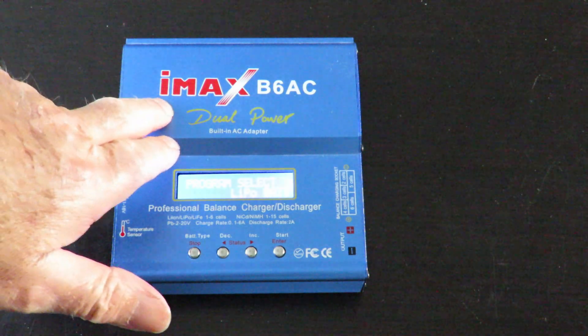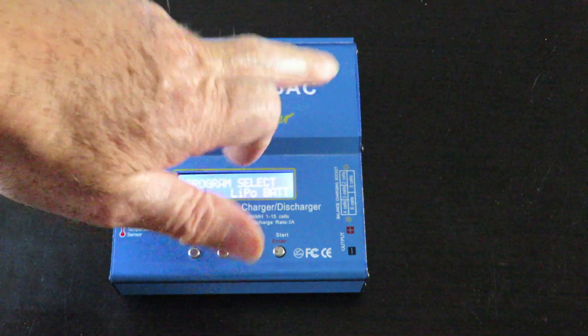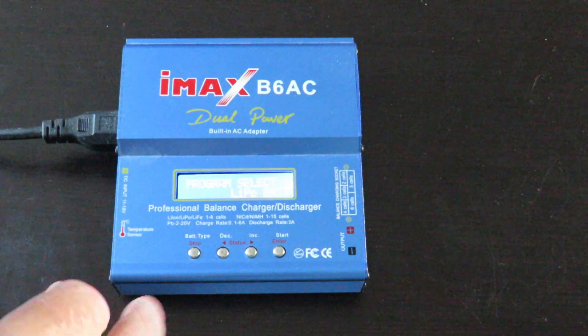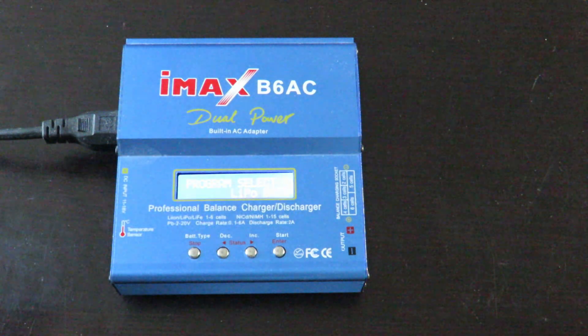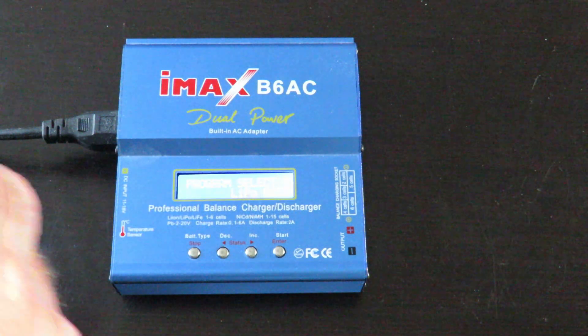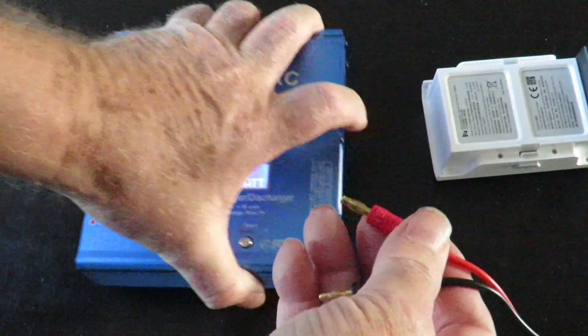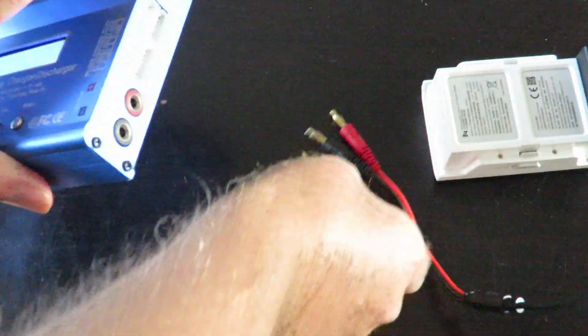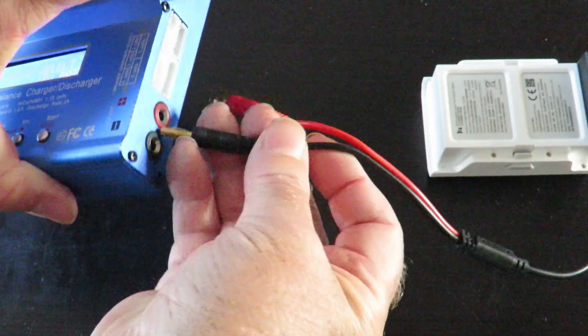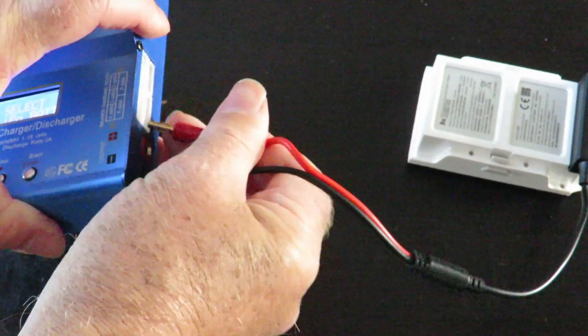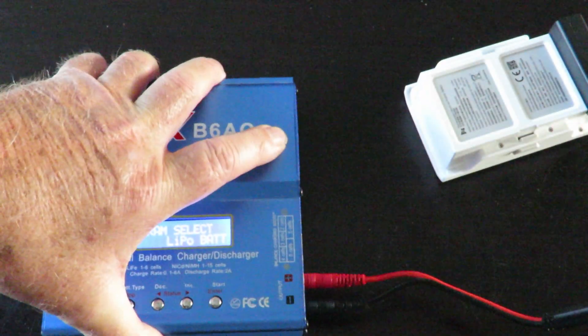We'll use a balance charger, this is an IMAX B6 AC. It's pretty straightforward - you select the LiPo battery as the system you're going to be charging, then connect up the battery itself, plug it in. I normally go negative first and then pop in positive.